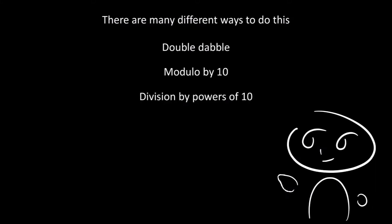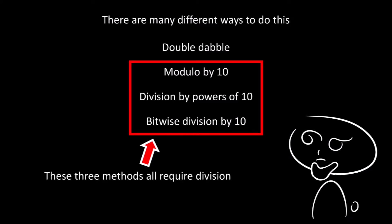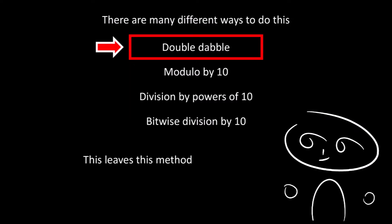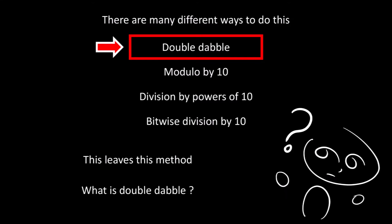There are many different ways to do this. There's double-dabble, modulo by 10, division by powers of 10, or bitwise division by 10. Now, note that these three methods here all require division, and division is generally quite a slow operation on a simple CPU. So that just leaves the first method, which is double-dabble. So what is double-dabble?